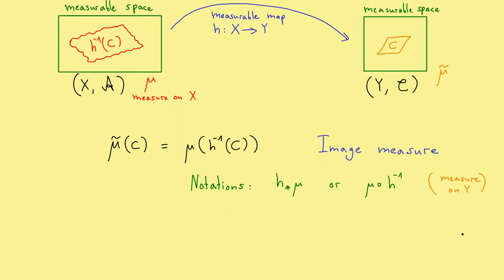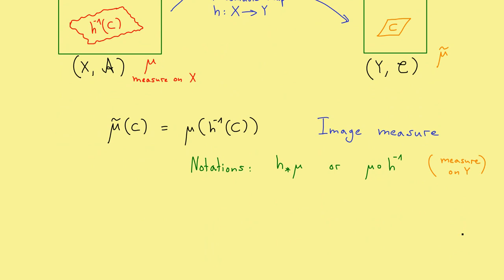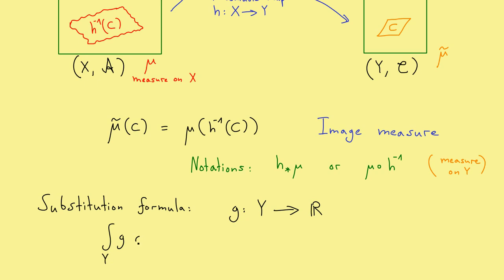By knowing the image measure, we can go over to our second topic: the substitution formula, which needs the image measure. So let's look at a function on the right hand side, defined on Y — we call it g — with values in R. This function should be integrable with respect to our image measure. This means the integral of g with respect to h★mu is well defined. The substitution formula tells us that we can go to the left and integrate there. In other words, we now have an integral over X with the function g composed with h, and on the left hand side we just measure with mu. That's the whole formula — you could call it the change of variables, and the change of variables happens with the measurable function h.